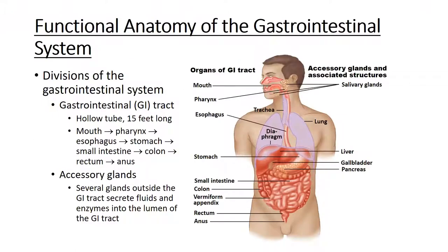The GI system is basically one continuous hollow tube. From your mouth, which starts at the oral orifice, to your anus, which ends at the anal orifice, there's a continuous hollow tube about 15 feet long, and there are different parts of that tube that have different functions.